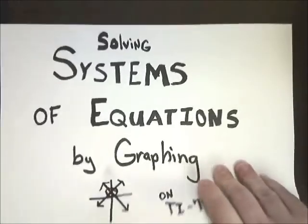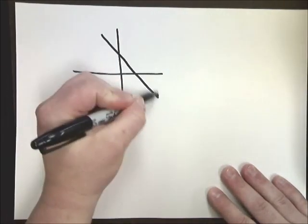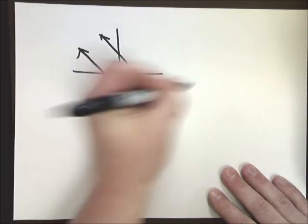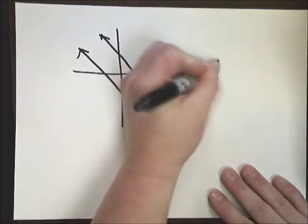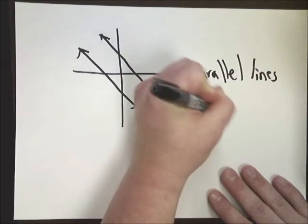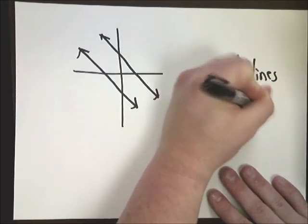Now, there are some other situations that may occur. For instance, if I have parallel lines. When I have parallel lines, my answer is going to have no solution because they don't intersect.